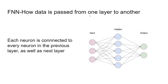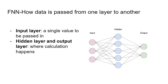How is data passed from one layer to another? We're not talking about the training process yet — just how one picture, one set of data, is passed into the input layer and how the values travel until they reach the output layer. The reason it's called a feedforward neural network is because each value is passed to the next layer one by one. Each neuron is connected to every neuron in the previous layer as well as the next layer, just as shown in the graph.